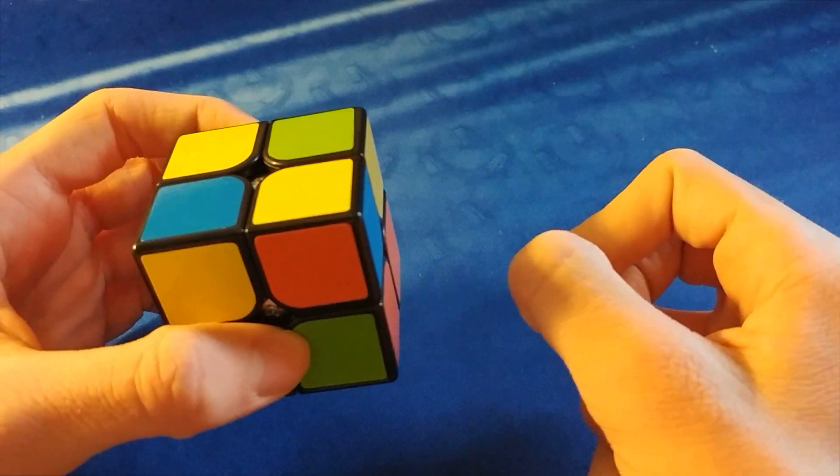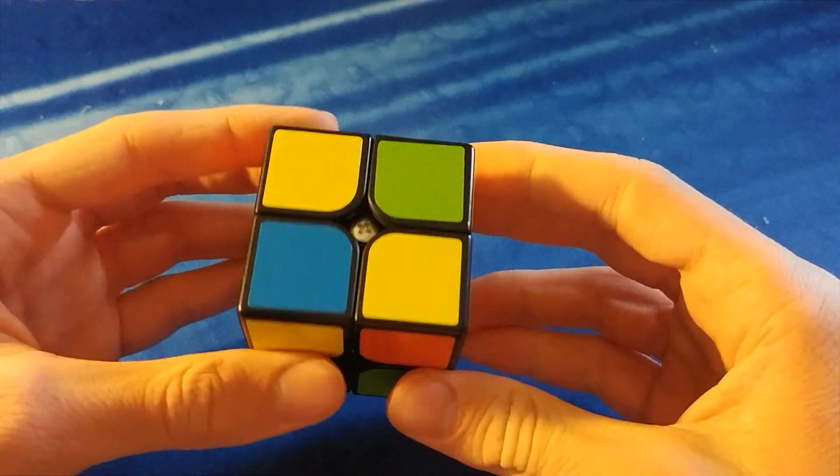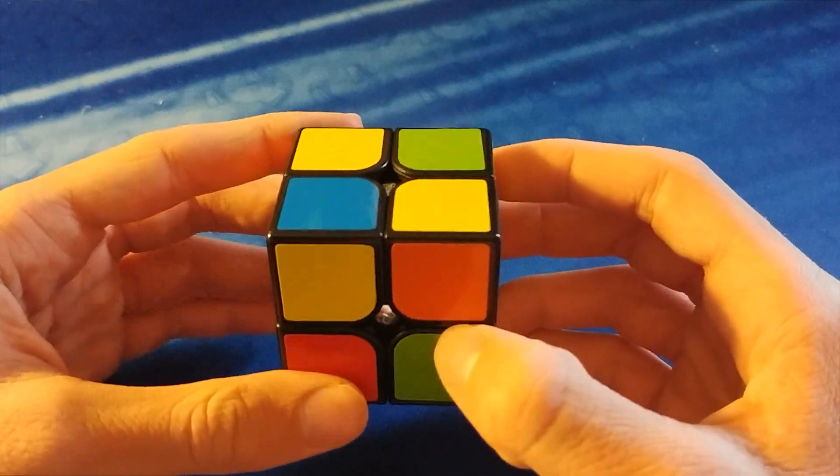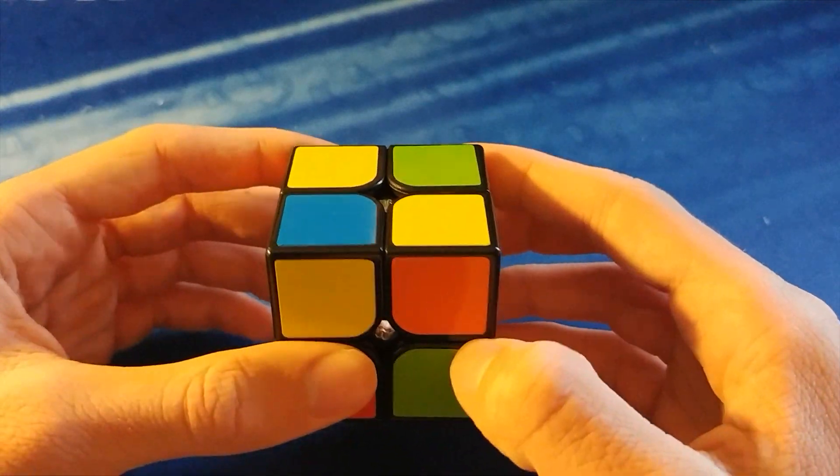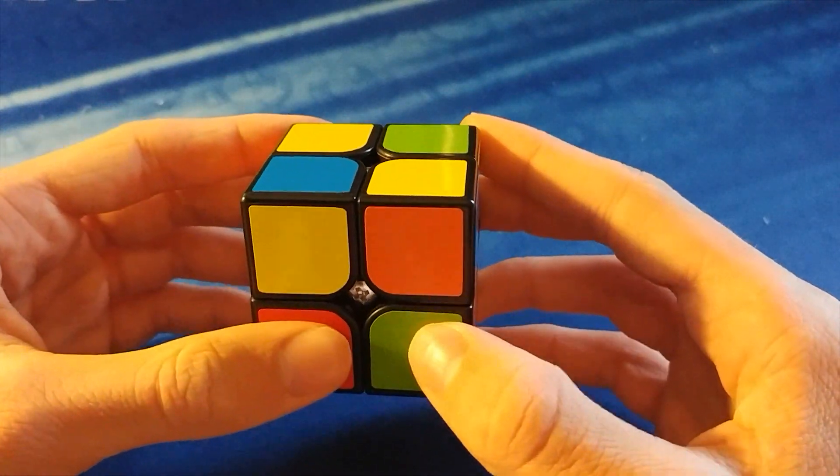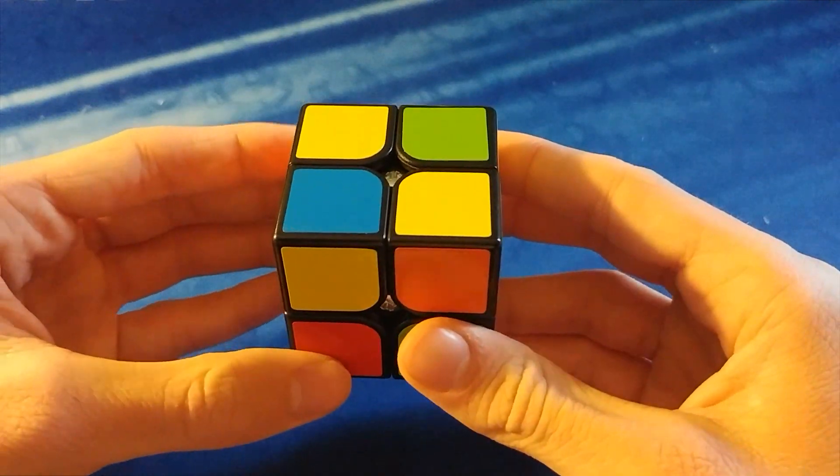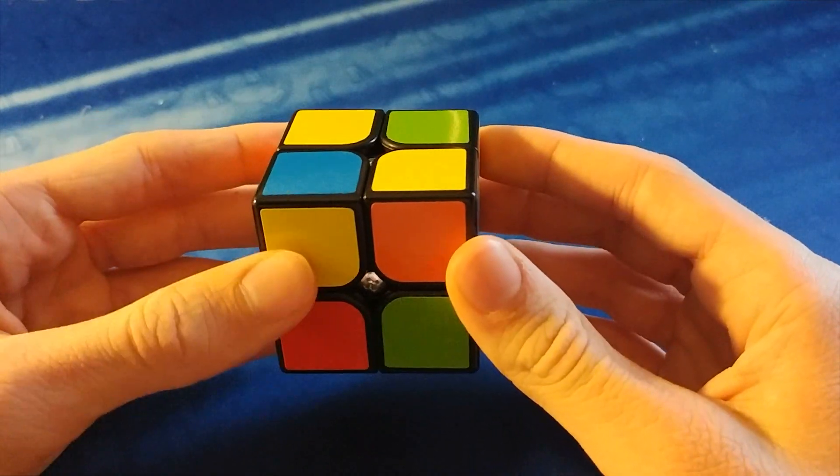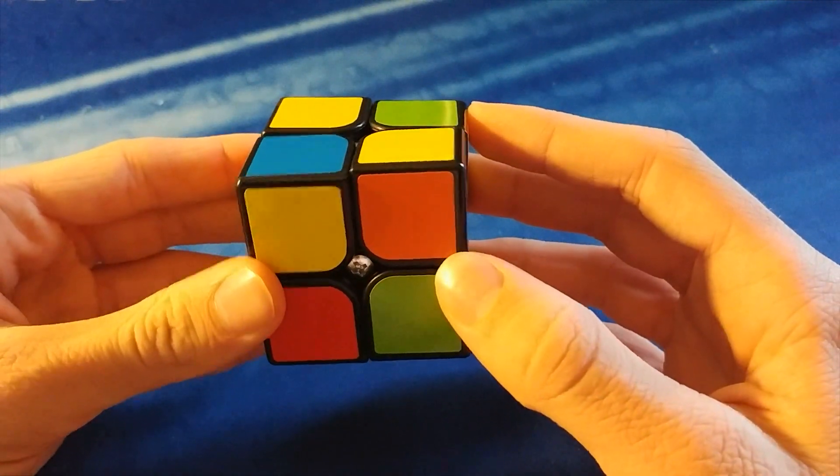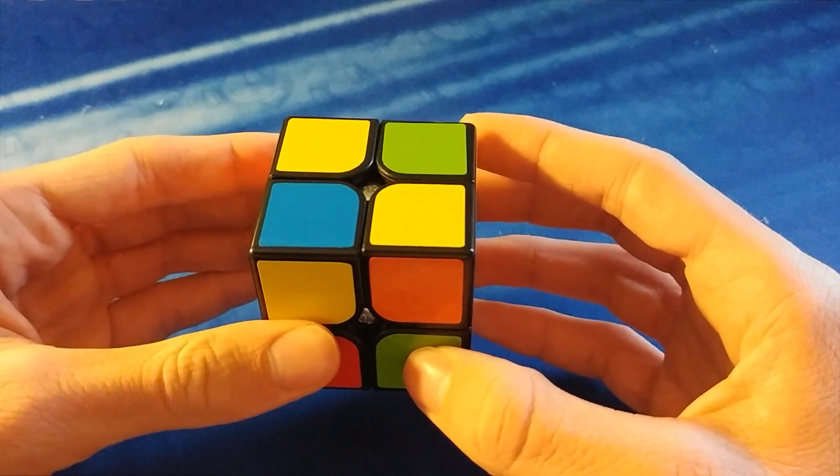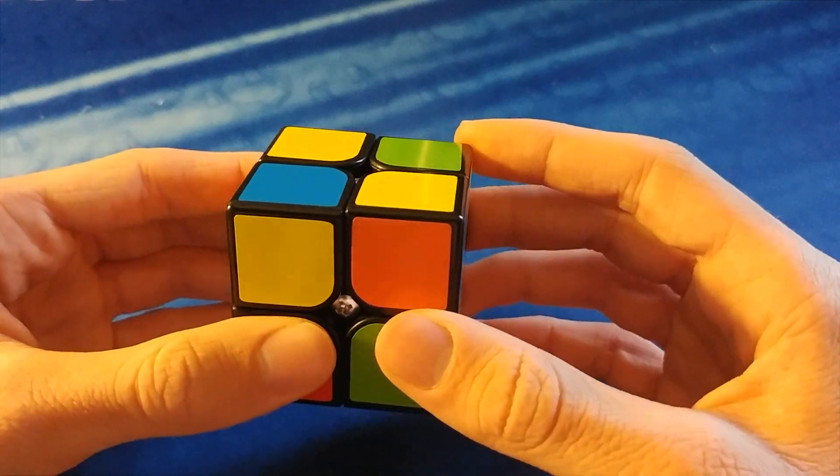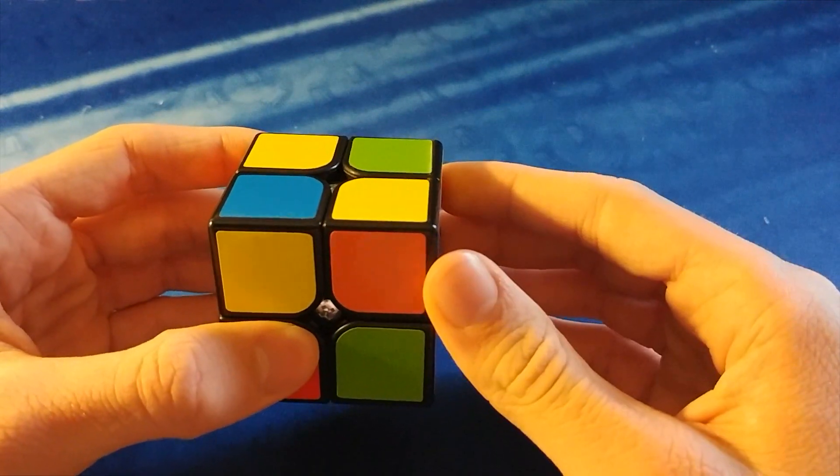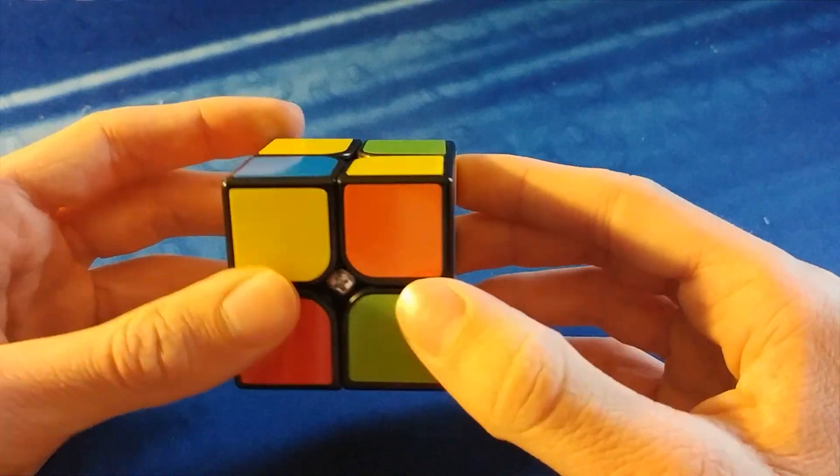If you know OLL, or CMLL, then you should already know the orientation cases for this, and all the algs that you can use, but if you don't, I do highly encourage that you use the algs I'm about to show you here, because they're a lot more efficient. Since we don't have edge pieces to worry about, we can have a little bit more freedom in what we do on the 2x2, and have more efficient cases, more efficient algorithms. So I'm going to show you all of the cases and all the algs that you need to learn. I'm going to go through them pretty quickly, but you can pause and look at them, and take your time, take as much time as you need.